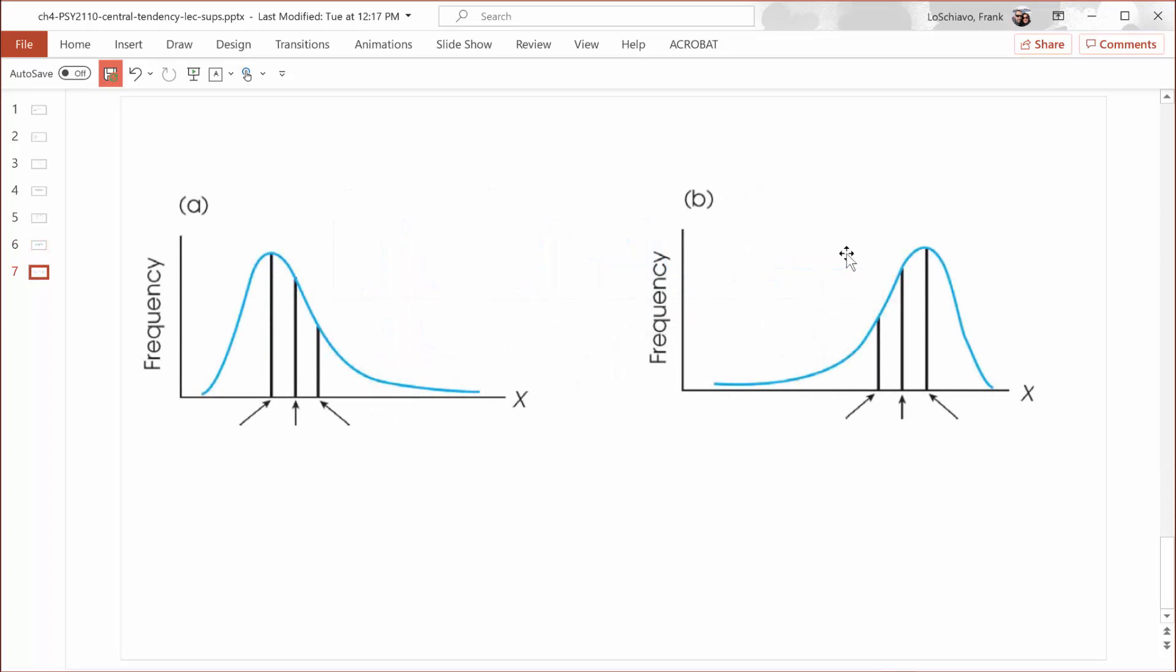This time, let's look at some skewed distributions. Let's label some points on the axes just to make it a little bit easier for us. Again, let's just assume we're dealing with quiz scores. Somebody could score as low as zero or as high as 10.